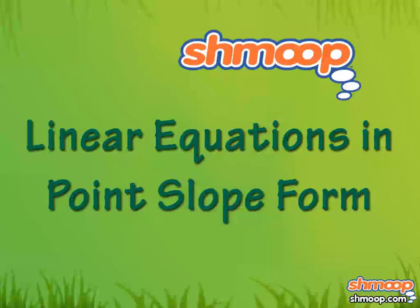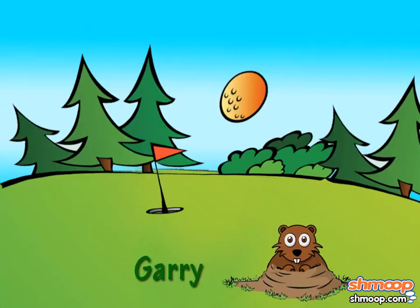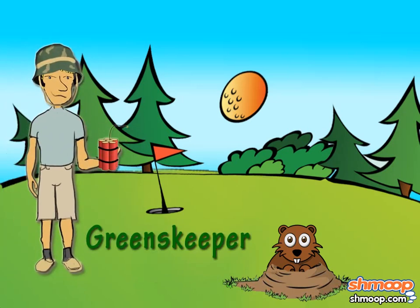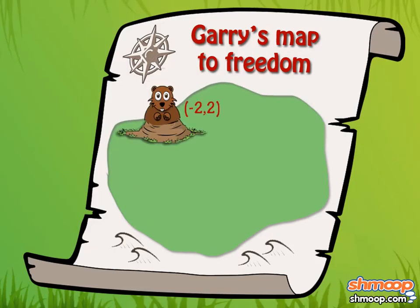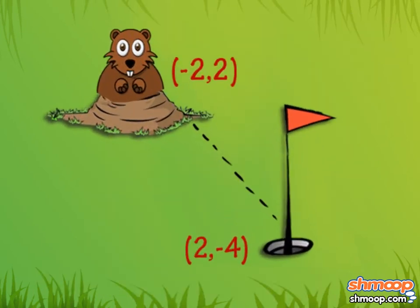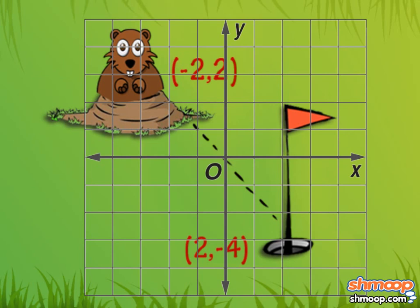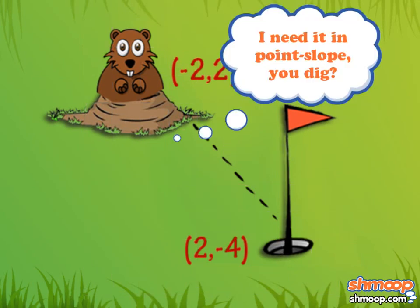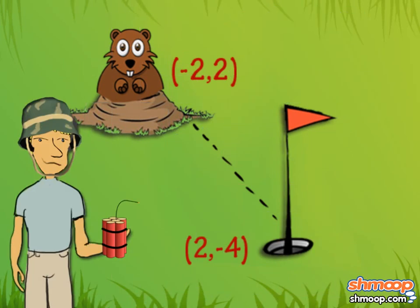Linear Equations in Point Slope Form, a la Shmoop. Gary the Gopher loves West Hills Golf Course, almost as much as the greenskeeper loves dynamite. Here's Gary's map. He's at point, and the door to freedom is at. Gary needs to solve the equation of the line so he can find his way to freedom, or else risk getting blown to bits by the greenskeeper.